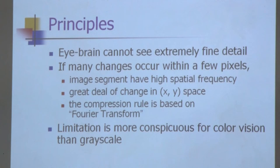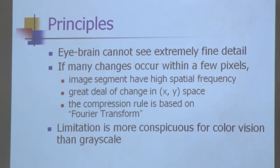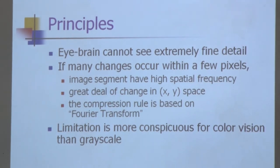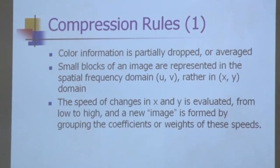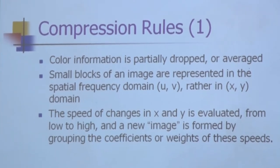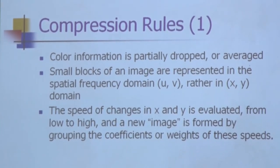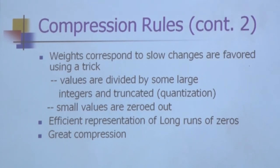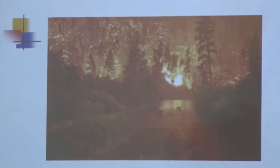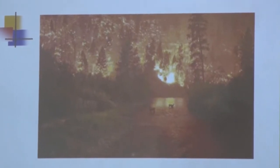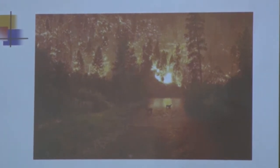The principle used is that the human brain cannot see extremely fine details. If many changes occur within a few pixels, that image segment has high spatial frequency — which is the rate of change of pixel intensity. The compression rule is based on the Fourier transform. The limitation is more conspicuous for color vision than for grayscale. This is an example of a JPEG compressed image at Q equal to 10%.